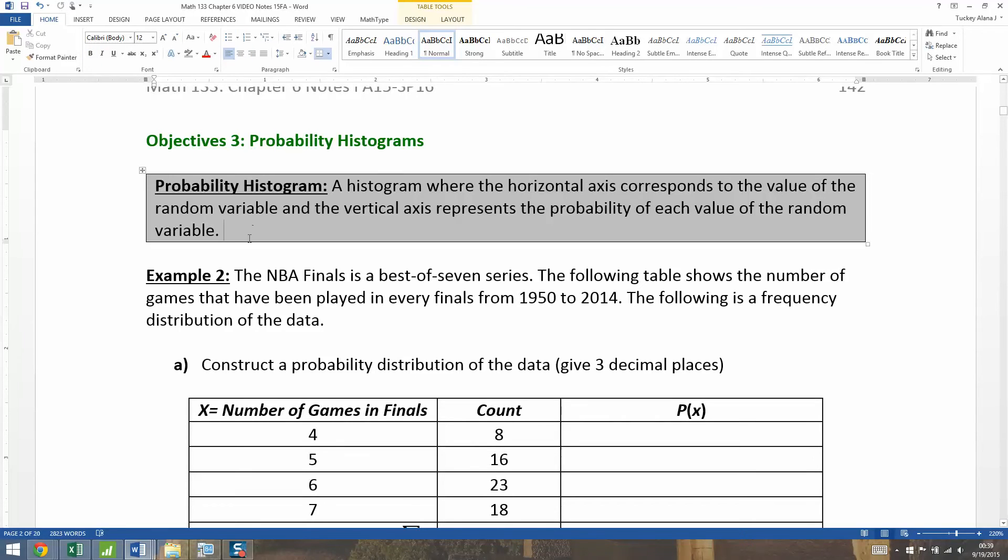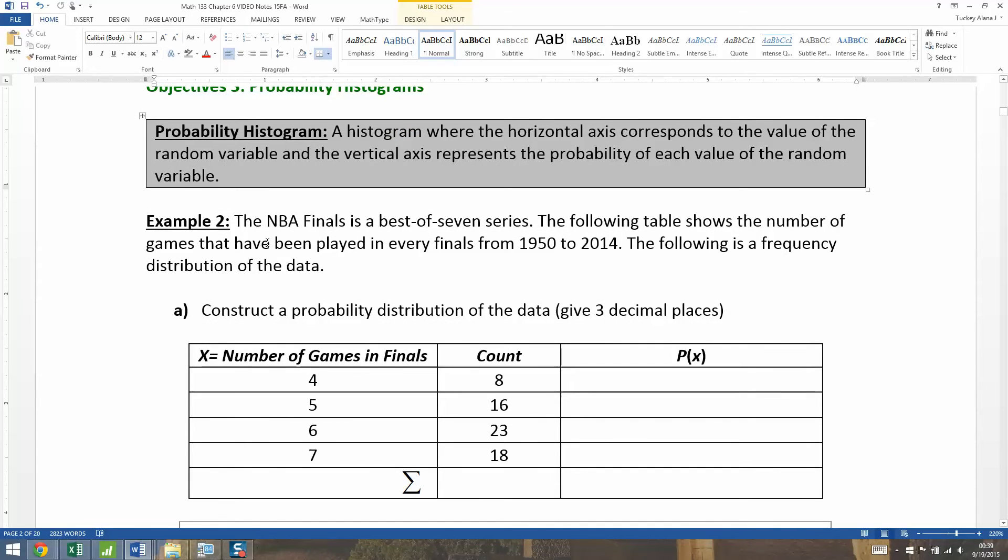A probability histogram is a histogram where the horizontal axis corresponds to the value of the random variable, and the vertical axis represents the probability of each value of the random variable. So let's do an example.